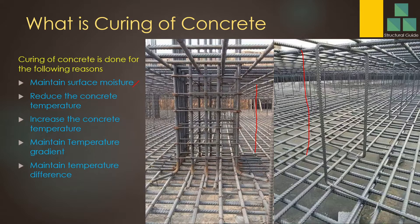We also have to maintain the temperature gradient in thick concrete. Temperature gradient means the temperature drop per meter length from the core. We also have to maintain the temperature difference, which is the temperature difference between the core and the surface. Both of these are maintained by curing. For thick concrete we don't use water curing — we use special types of curing methods. These curing precautions protect the concrete against cracking.